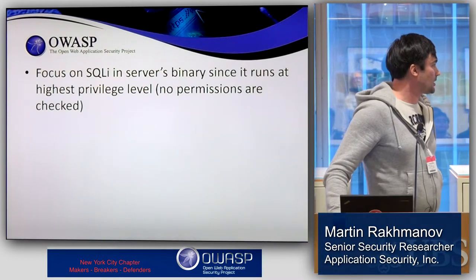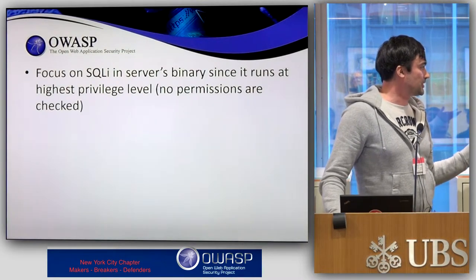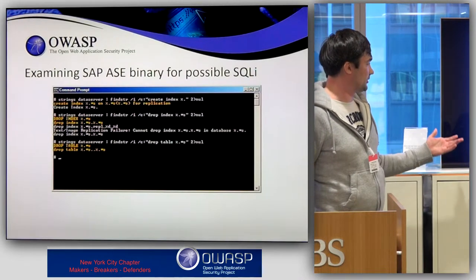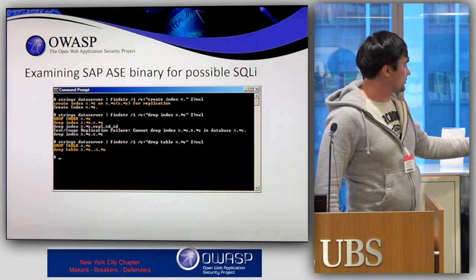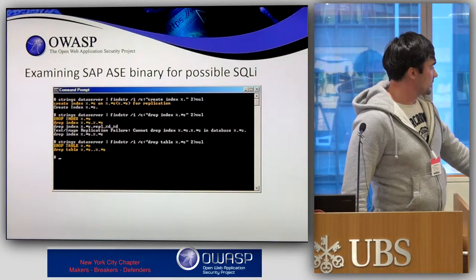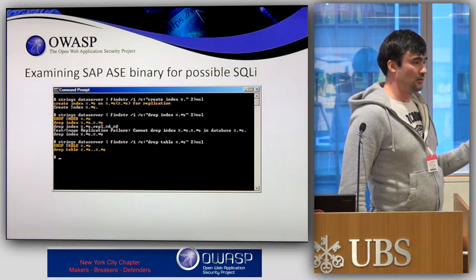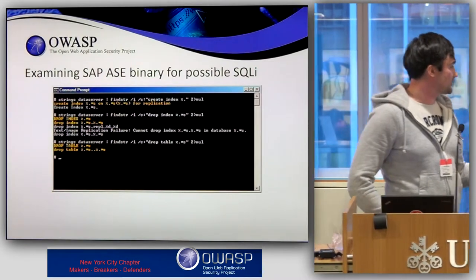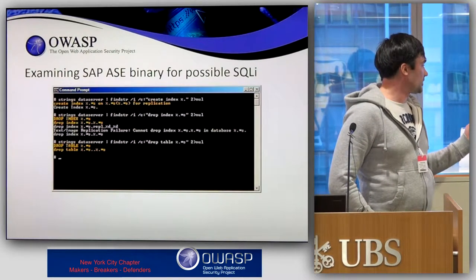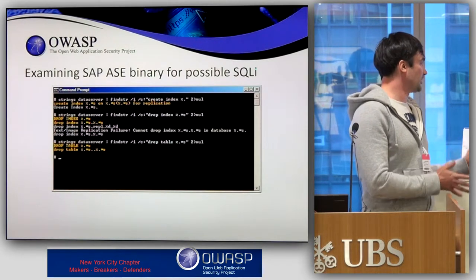I started looking into Adaptive Server Enterprise by just grepping over the binary itself. This slide shows how you can find SQL strings embedded into the database server — strings like 'create index', 'drop index', or 'drop table'. I also look for parameterized queries, indicated by a percent-sign followed by 's', meaning they're dynamically generated on the fly. I highlighted several statements like 'drop index' and 'drop table' that have parameters. In fact there are huge blocks of these strings embedded into the database server, and each of them is possibly a SQL injection vulnerability.